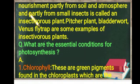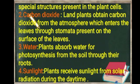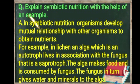What are the essential conditions for photosynthesis? First, chlorophyll — these are green pigments found in the chloroplasts, which are special structures present in plant cells. Second, carbon dioxide — land plants obtain carbon dioxide from the atmosphere, which enters the leaves through stomata. Third, water — plants absorb water for photosynthesis from the soil through their roots. Fourth, sunlight — plants receive sunlight from solar radiation during daytime.